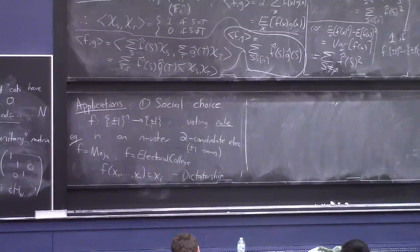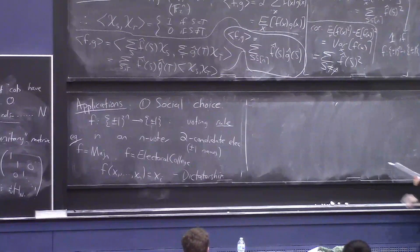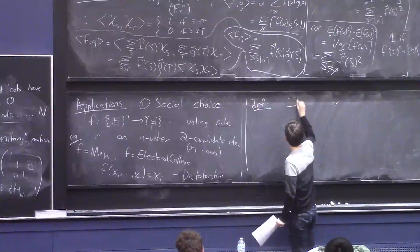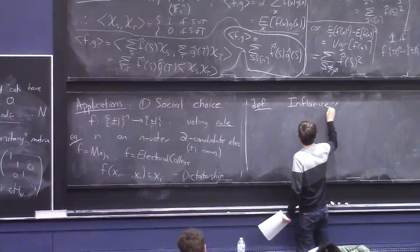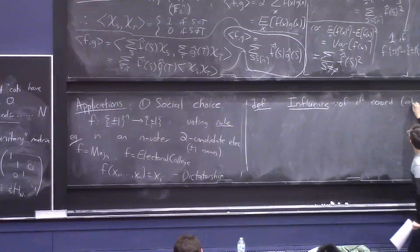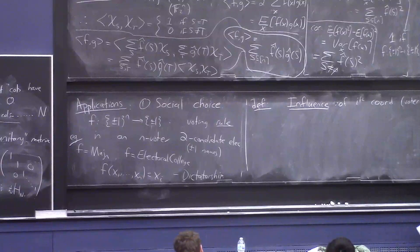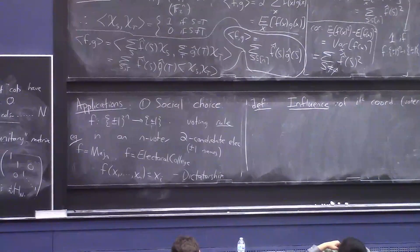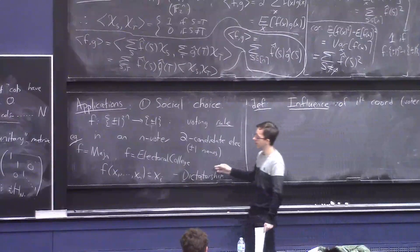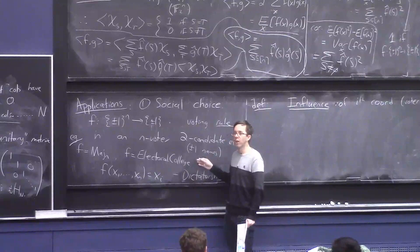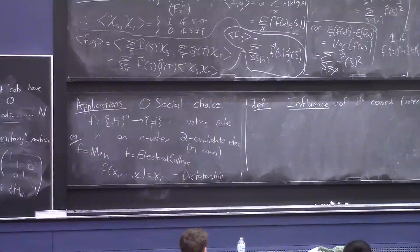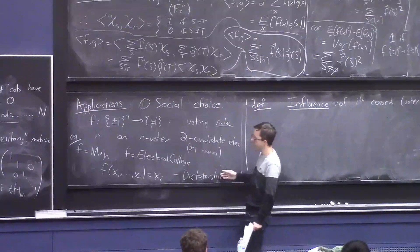That's an interpretation of Boolean functions in terms of voting. Now let me tell you an example of how Fourier coefficients can tell you things about your voting scheme. There's a concept in analysis of Boolean functions called the influence of the i-th coordinate, or voter if you will, on election rule f. In the social choice literature, it's called the Banzhaf Power Index. It's some attempt to measure how important i's vote is to an election scheme. Sometimes you have a symmetric scheme like majority where everybody has the same influence. Sometimes not.